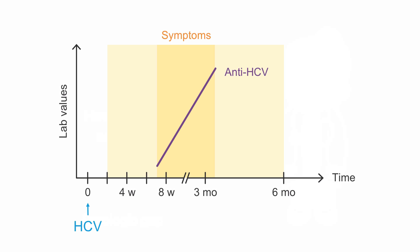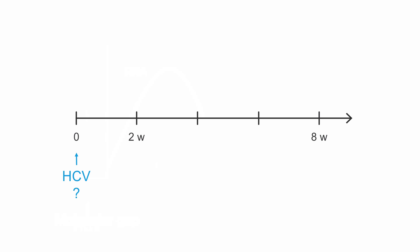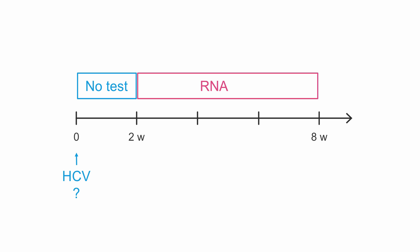In this case, I need to measure RNA levels right away to avoid the serologic gap. But remember, there is also a molecular gap of 2 weeks. In this period, we are not able to determine whether an infection has taken place. So if you believe your patient was recently exposed to HCV, you will have to wait 2 weeks to detect an early infection. In the following weeks, before an immune response begins, it is necessary to measure RNA to confirm an infection.